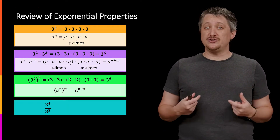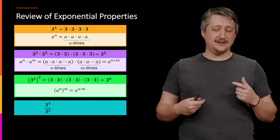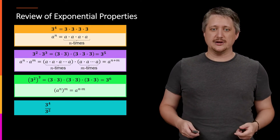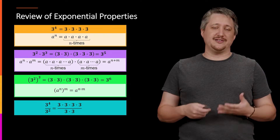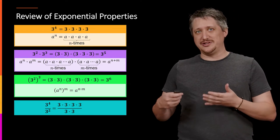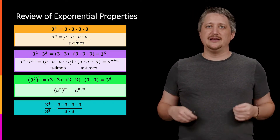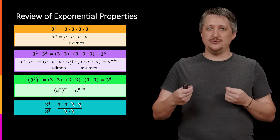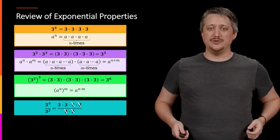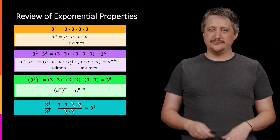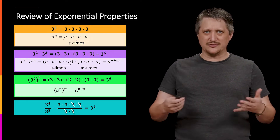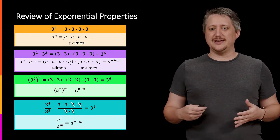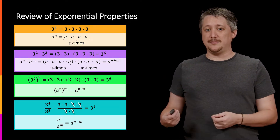So if we have division of two things — again, importantly the same base — we have three to the fourth divided by three squared. If we write this out, that's three times three times three times three over three times three. We can cross out like terms: two on top and two on the bottom, leaving three squared. So in general, a to the n over a to the m is just a to the n minus m.